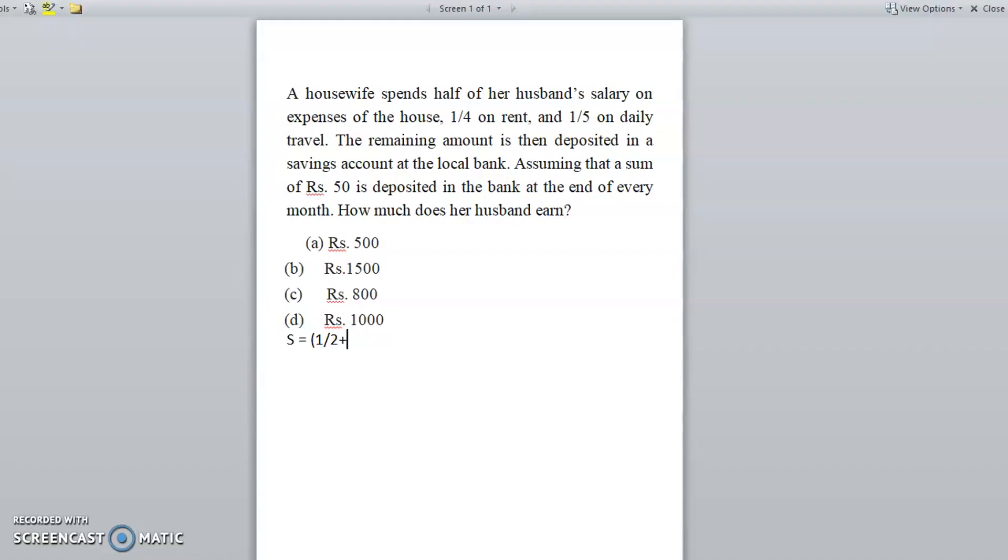One-half for the house expenses, plus one-fourth on rent, plus one-fifth on daily expenses. That is the total expenses multiplied by S, and how much is the saving amount? That is 50 rupees. This is the total salary.